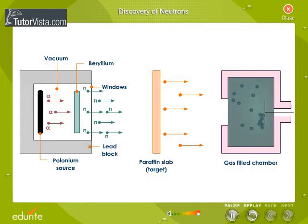He placed a source of polonium in an evacuated chamber. In front of the polonium source, a thin foil of beryllium was placed. The alpha rays were made to hit the foil of beryllium.